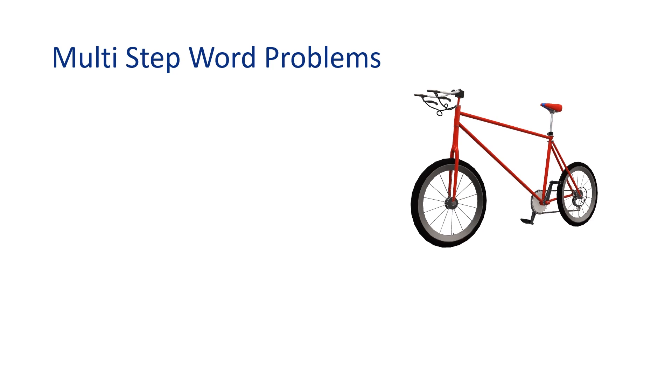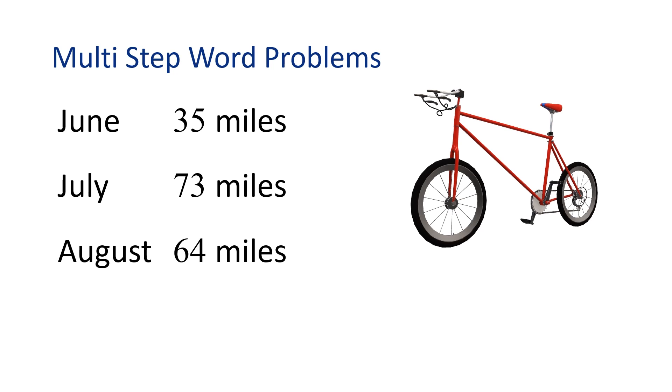Did you hear about my friend Tom? Tom biked 35 miles in June, 73 miles in July, and 64 miles in August. That's a lot of bike riding. How many miles did he bike altogether? Let's use addition to determine how many miles Tom biked in total. Do you remember how we can add 35 plus 73 plus 64?